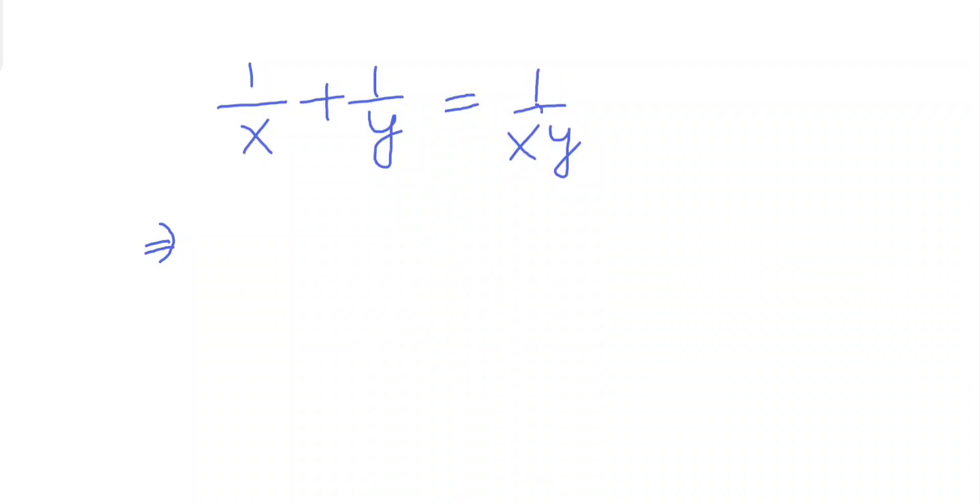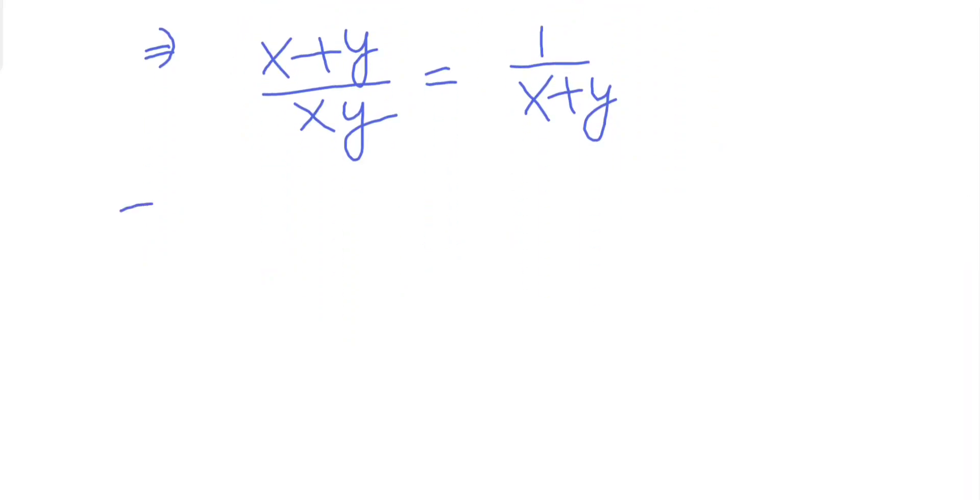This is 1/x + 1/y = 1/(x+y). Now let's simplify. If we simplify we'll get something like this, and from which (x+y)² = xy. Using the formula, if you open it, we'll get something like this.